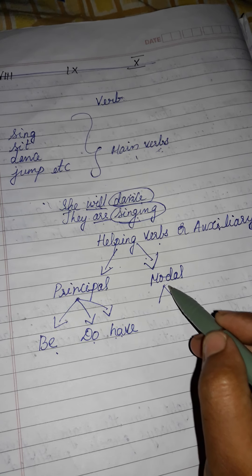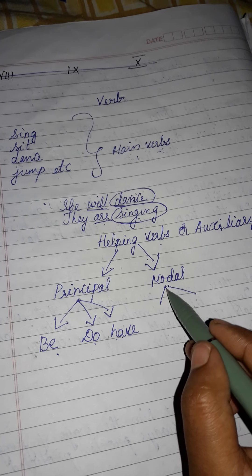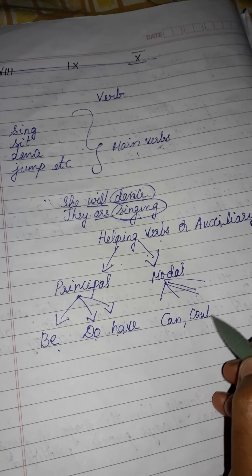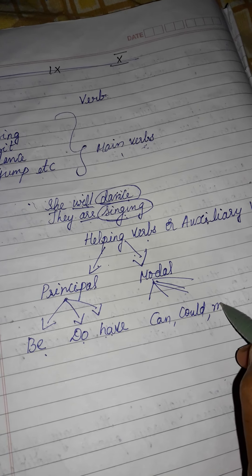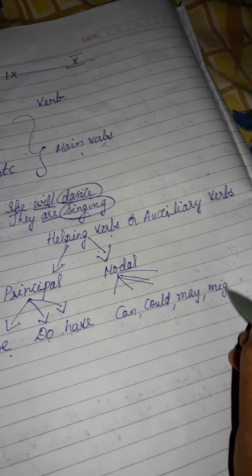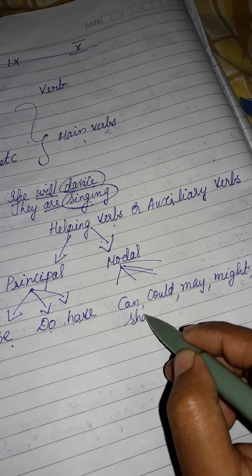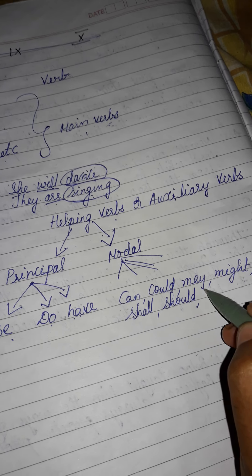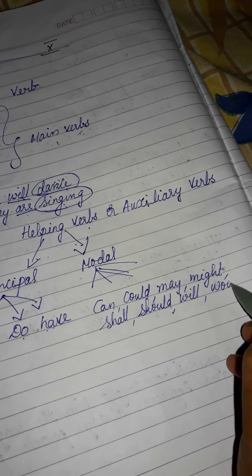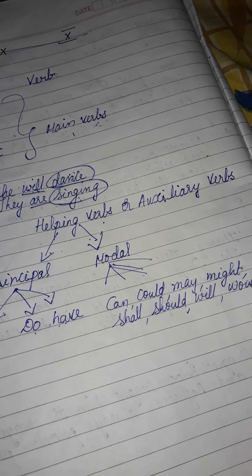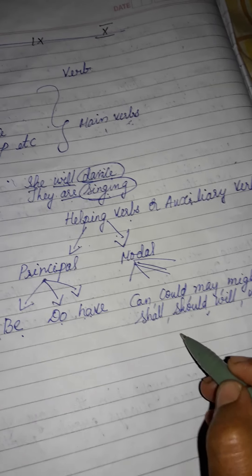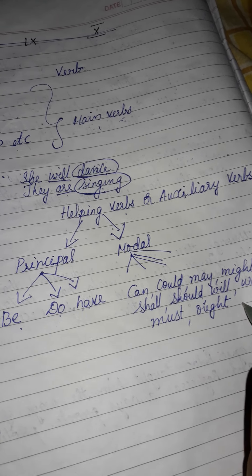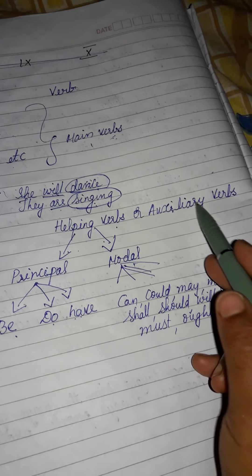We will see the examples of modal auxiliaries. We have so many, like: can, could, may, might, shall, should, will, would, must, and more. We have so many modal auxiliary verbs.